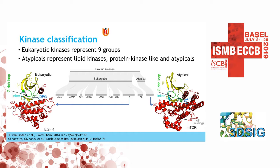The classification we use in CLIPS is the one that Manning uses. The eukaryotic protein kinases represent nine groups, from AGC to TK and TKL — an example is EGFR. The atypical ones include mTOR and PI3K; they're called atypical because at the sequence level they are really different from the eukaryotic ones. However, structurally the lipid kinases and protein kinase-like groups are really similar to the eukaryotic ones — the G-rich loop, the linker, the alpha-C, and the beta sheets are all present. A small subgroup of the atypicals has very different structure and sequence and cannot be aligned to the eukaryotic ones.